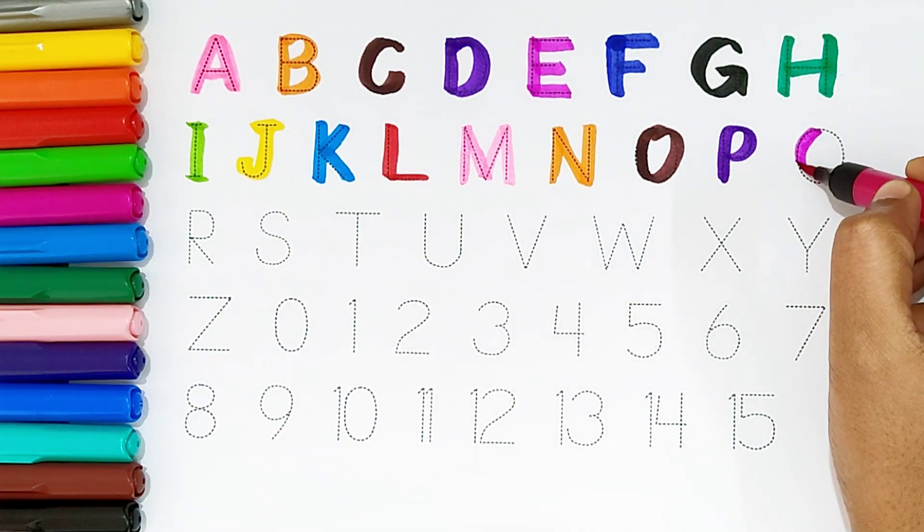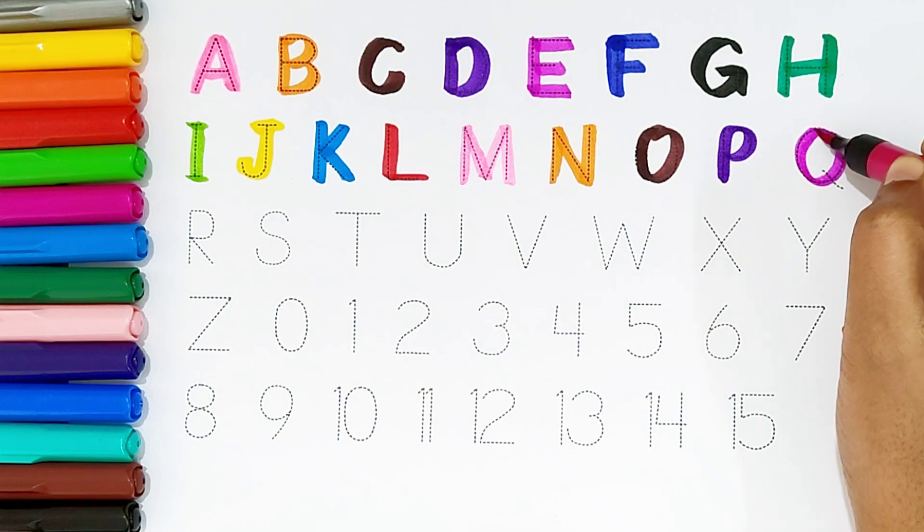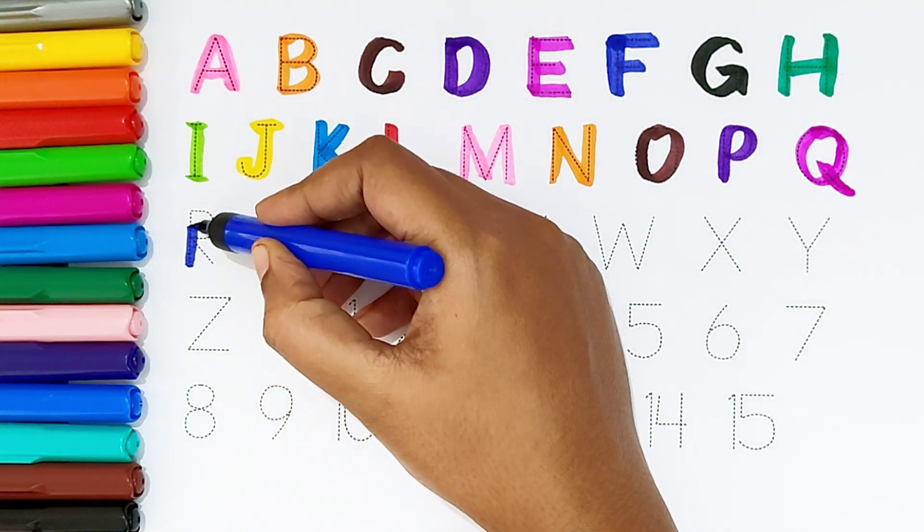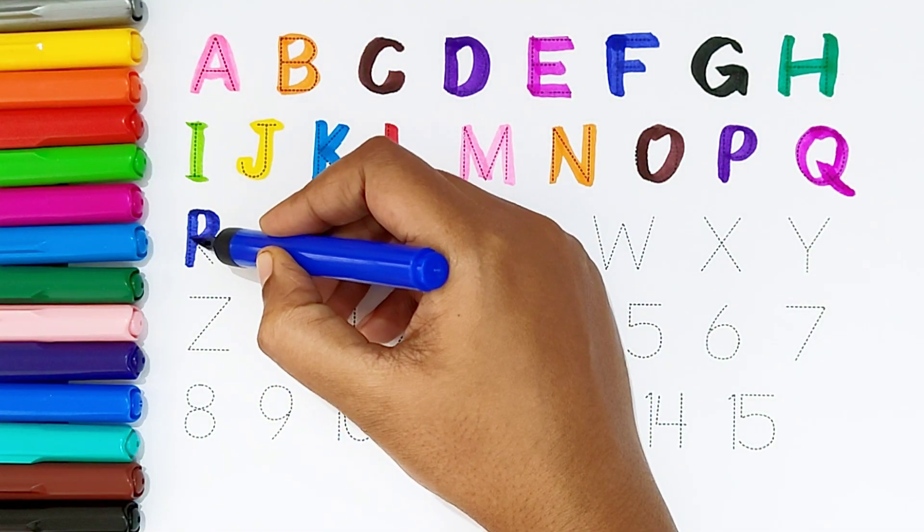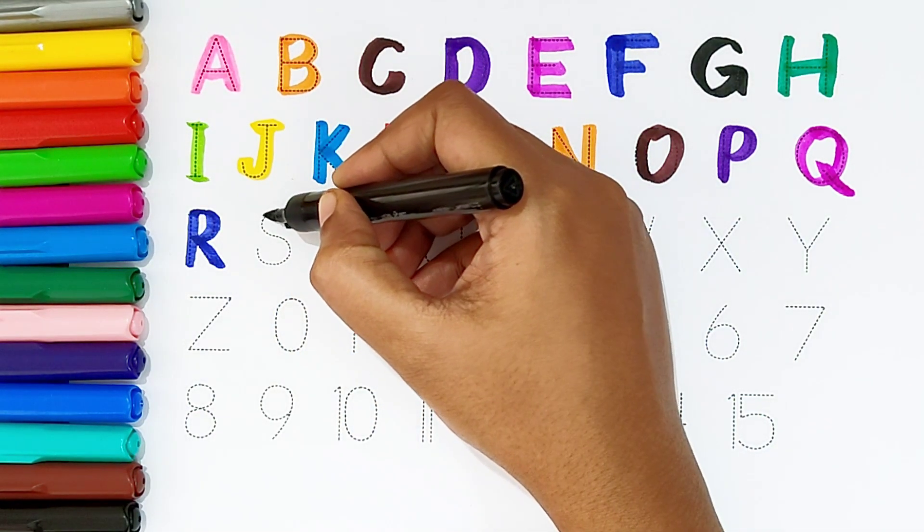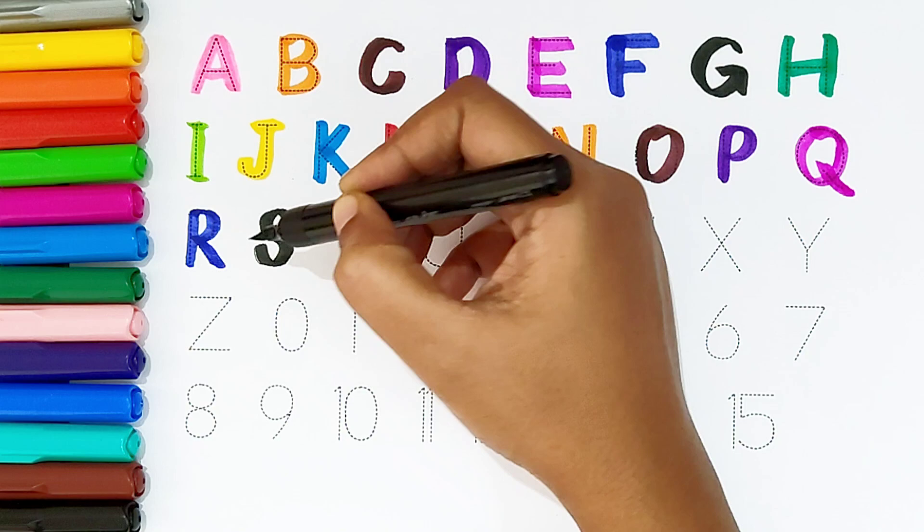Q, dark pink color. Q is for question. R, dark blue color. R is for rat. S, black color. S is for Saturday.